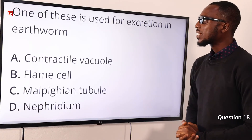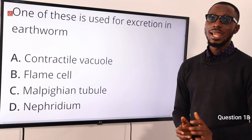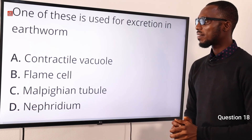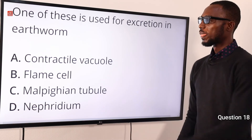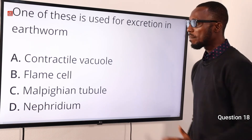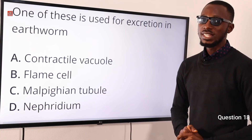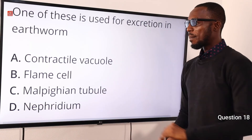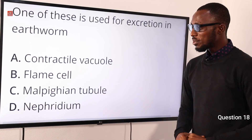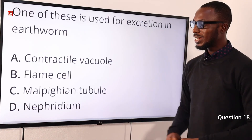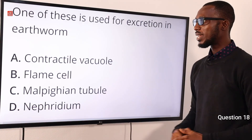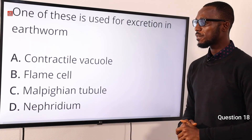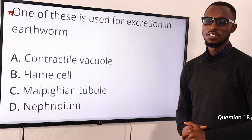Number 18. One of these is used for excretion in earthworms. Option A — contractile vacuole — that is in amoeba. Flame cell — that is in flatworms. Malpighian tubule — that is in insects. Nephridium — that is for earthworms. The correct option is option D for nephridium.